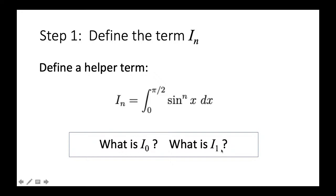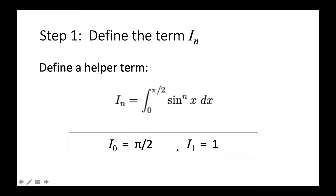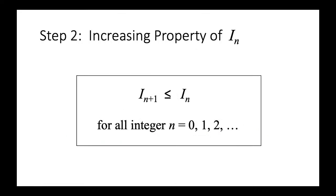First we find the boundary conditions I(0) and I(1). I(0) is easy: sin^0(x) = 1, so this is the integral of 1 dx from 0 to π/2, which equals π/2. For I(1), we integrate sin(x) dx; the antiderivative is −cos(x). Evaluating from 0 to π/2: cos(π/2) = 0 and cos(0) = 1, so −cos(x) evaluated from 0 to π/2 equals 1.